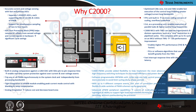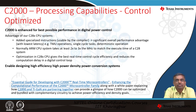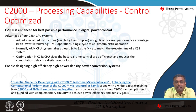Each C2000 peripheral has been carefully designed and differentiated to provide faster response and lower latency. Looking at processing capabilities, the C28X core has specialized instructions used by the compiler to save cycles — trigonometric operations, multiplication, and division are all highly optimized. An ARM CPU would typically need 2–3x the clock frequency to match C28X execution time. On top of the C28X core, additional differentiation elements further improve processing capability.